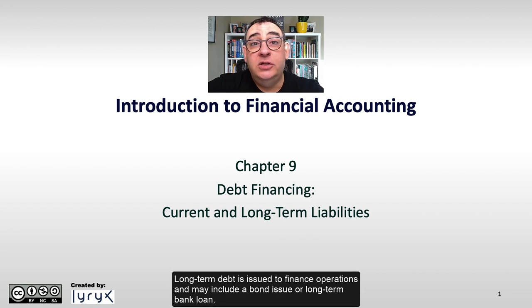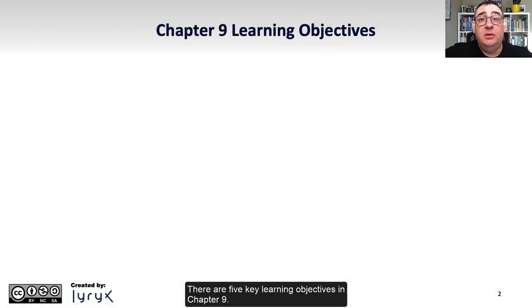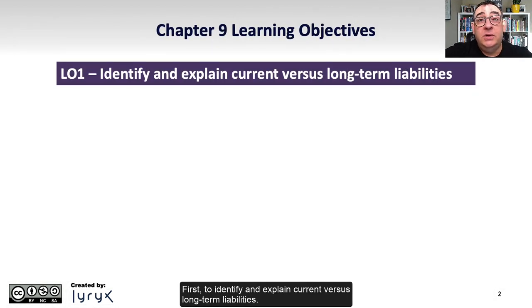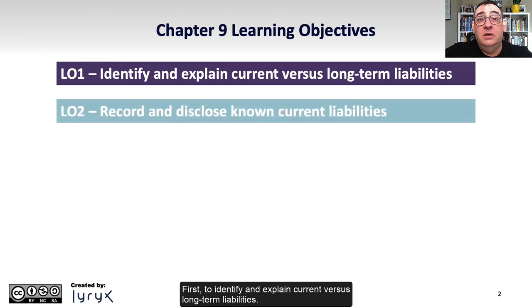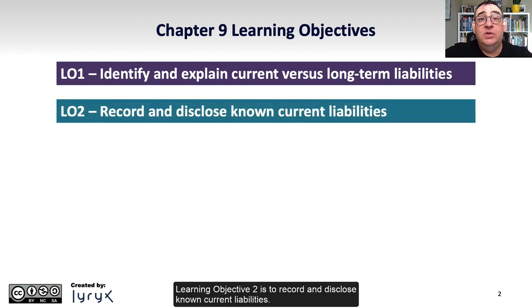Long-term debt is issued to finance operations and may include a bond issue or a long-term bank loan. There are five key learning objectives in Chapter 9. First, to identify and explain current versus long-term liabilities. Learning Objective 2 is to record and disclose known current liabilities.